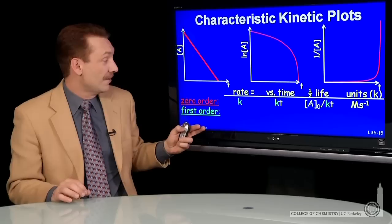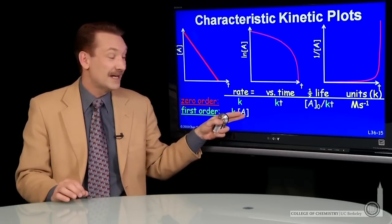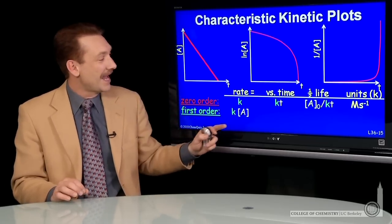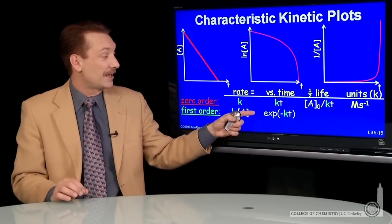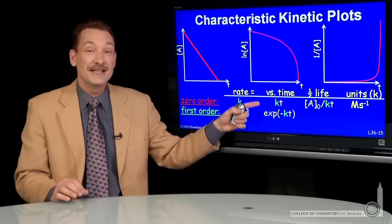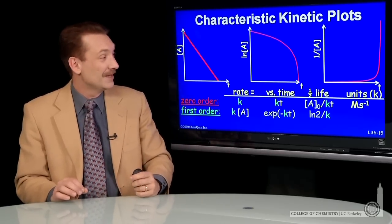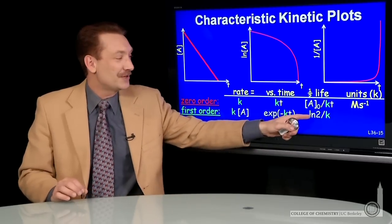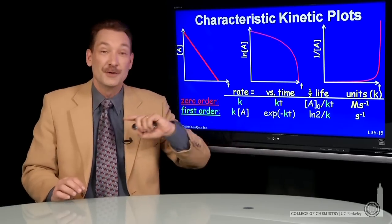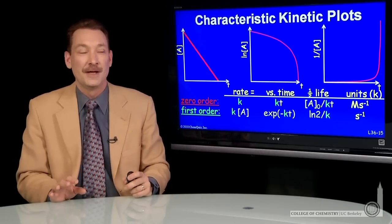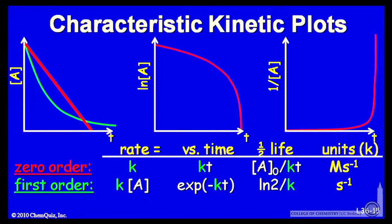Let's look at first order kinetics. The rate is k times A to the first power, and if I write that versus time, that gives an exponential — the concentration is e to the minus kt versus time. Half-lives are given by natural log 2 over k, independent of the concentration for first order kinetics, and the units of the rate constant are reciprocal seconds. Looking at natural log concentration versus time for first order kinetics, that is a linear plot.